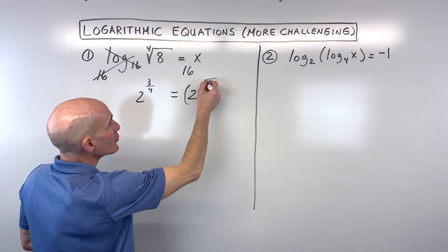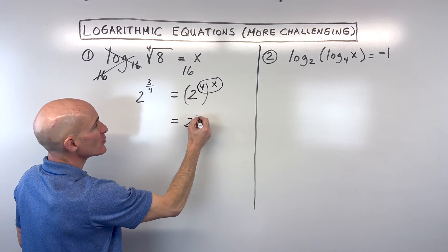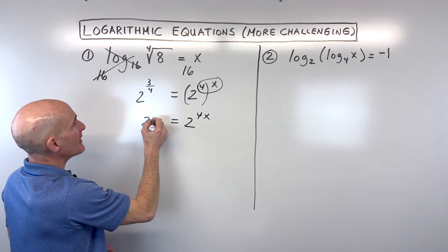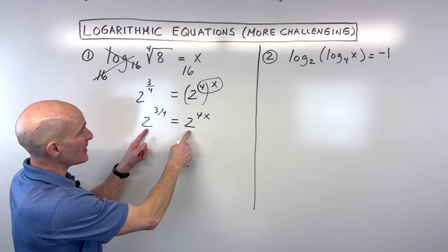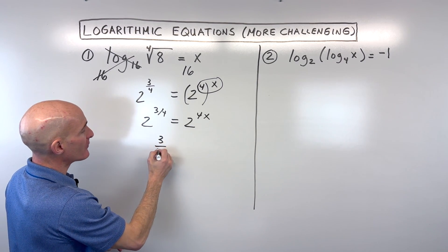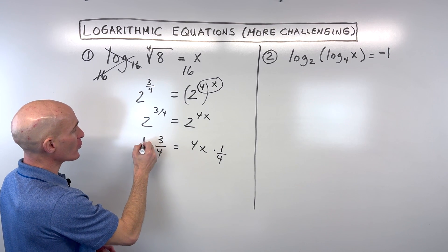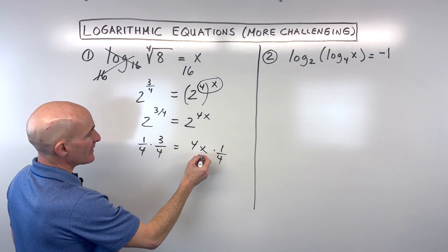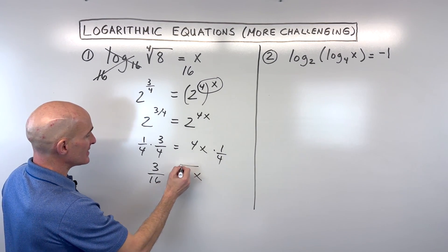Now remember, when you have an exponent raised to an exponent, or we call it a power to a power, you multiply those exponents together. And then now look what we have. We have the one-to-one property of exponents. We have the same base, so we can set those exponents equal to each other and solve. So we have 3 fourths equals 4x. Let's just go ahead and multiply both sides by 1 fourth. And that comes out to x is equal to 3 sixteenths.